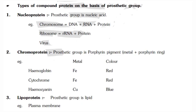Types of compound proteins are classified on the basis of their prosthetic group. The first type is nuclear protein, where the prosthetic group is nucleic acid. Examples include chromosomes, which are composed of DNA, RNA, and protein. Ribosomes are composed of ribosomal RNA (rRNA) and protein.